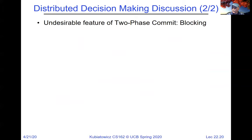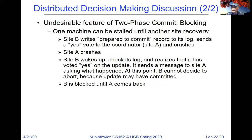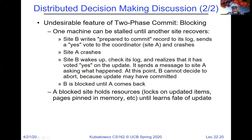Why is two-phase commit not subject to the general's paradox? Two-phase commit is about all nodes eventually coming to the same decision, but not necessarily at the same time. We allow reboot and continue to gather information so that eventually they all have recorded their decision in their logs. An undesirable feature of two-phase commit is blocking: one machine can be stalled until another site recovers. A blocked site essentially holds resources — which might be locks or pages pinned in memory — until it learns the fate of the update.